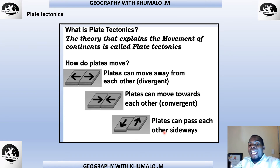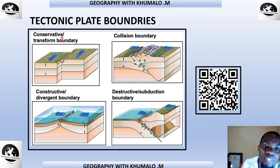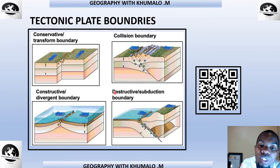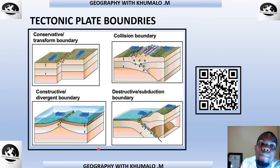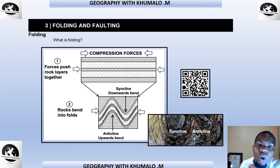You also need to know the four tectonic plate boundaries. The conservative or transform boundary involves plates sliding past one another. The collision boundary involves plates bending together. The constructive boundary is divergent — plates move apart. The destructive or subduction boundary involves one plate being pushed under another. Know and understand all four boundaries for Grade 10.